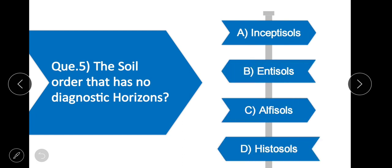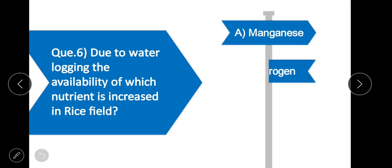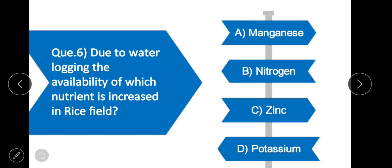Question 5: The soil order which has no diagnostic horizons — the correct option is option B — Entisols. Entisols have no diagnostic horizons.